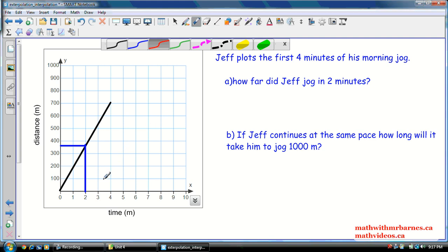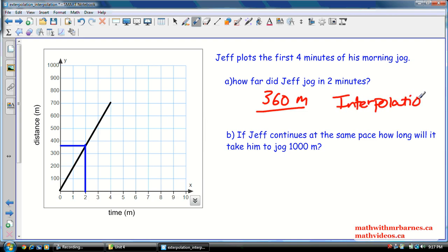Alright. So, how far did Jeff jog in two minutes? Well, two minutes is right here. He jogged 360 meters. So, again, this is within our data points here, even though we don't have any specific data points here. This would be an example of interpolation, because we're estimating basically inside the data. Within our data.